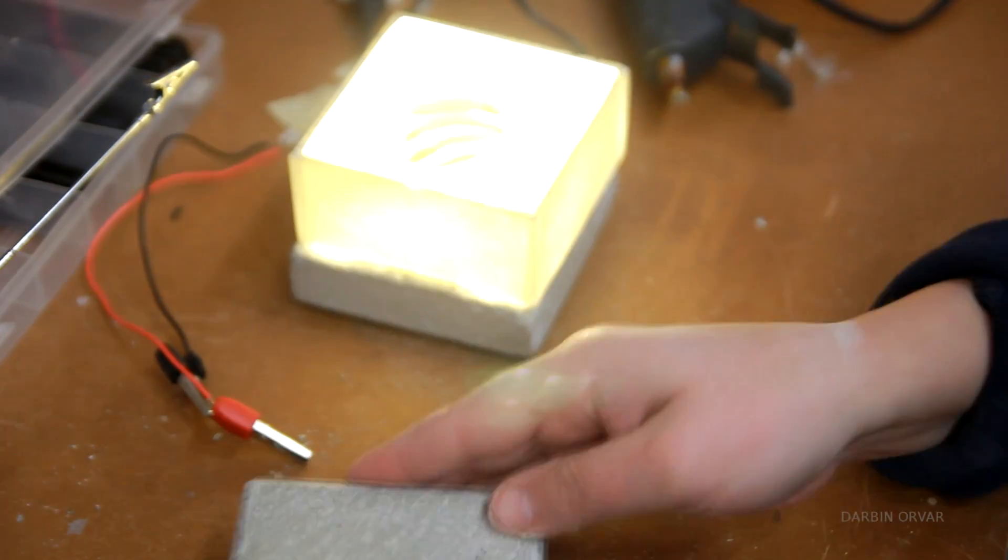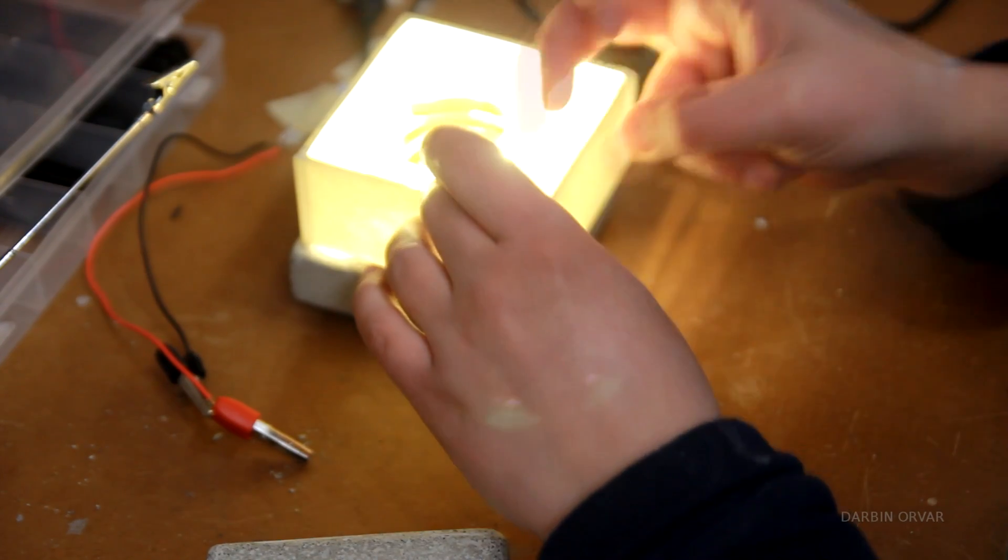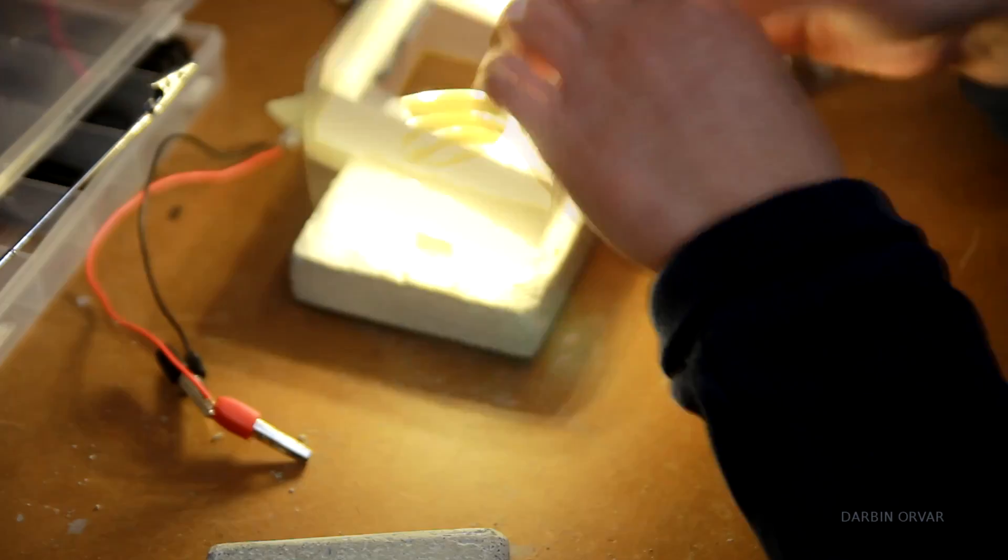Once everything looked good, I epoxied the plastic square to the concrete pieces. And I also put some shellac on the concrete to seal it.